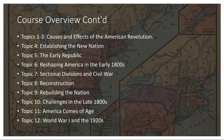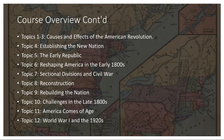Topic 3, the early years of the Republic, were marked by debates between Federalists and Anti-Federalists. The Bill of Rights was added to the Constitution, guaranteeing individual freedoms. The expansion of the nation westward, facilitated by the Louisiana Purchase, brought both opportunities and challenges. Figures like George Washington and Thomas Jefferson played instrumental roles in shaping the nation's direction and defining the principles of democracy.